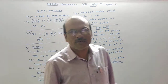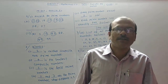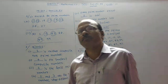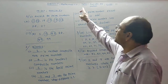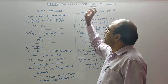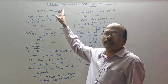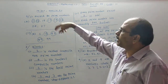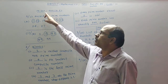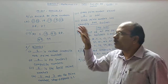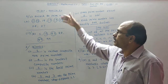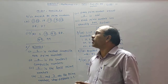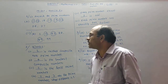Good morning students. Welcome to our math class. We were in the chapter Multiples and Factors, exercise 8.6. All of you take out page number 107. We will see about prime numbers and composite numbers.